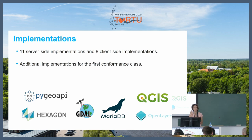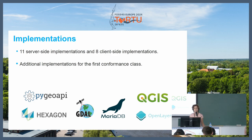Talking about implementations — right now there are 19 implementations registered on the OGC API Tiles website. These specifically implement OGC API Tiles. But if you consider just the first conformance class — conforming to the template URL — then that number is even larger.